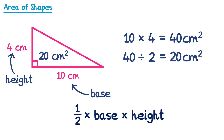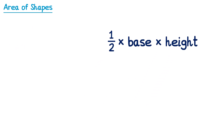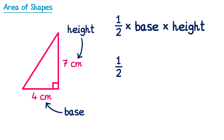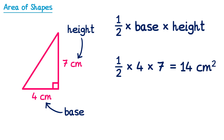Let's have a look at how we can use this to find the area of some other triangles. If we take this triangle, we need to identify the base and the height. Here the base is 4 and the height is 7. So using the formula, we do one half multiplied by the base, which is 4, multiplied by the height, which is 7. We could start by doing half of 4, which is 2, and then multiply this by 7, which is 14cm squared. Or alternatively, we could multiply the 4 and the 7 first, which is 28, and then do half of this — half of 28 is still 14.